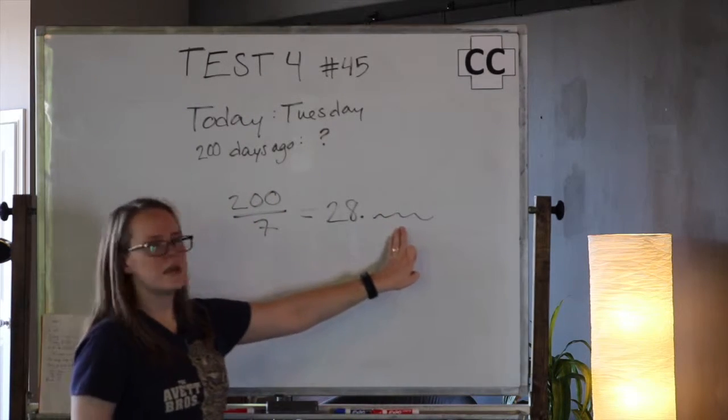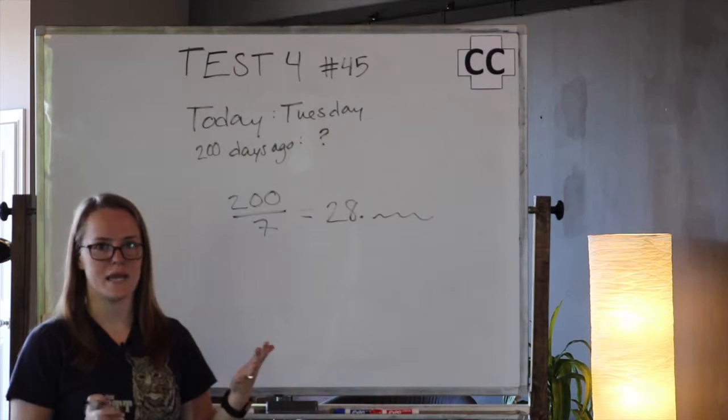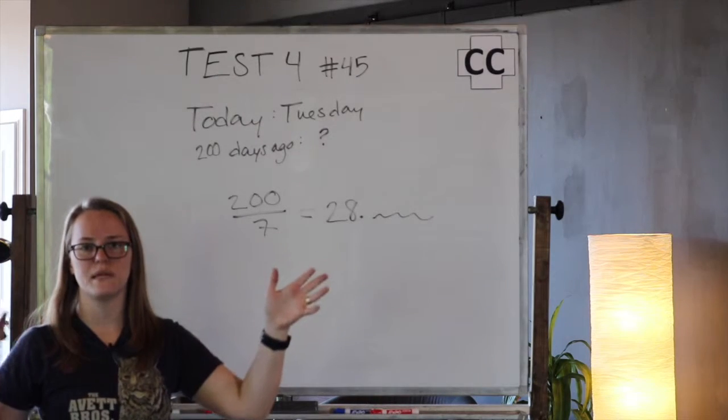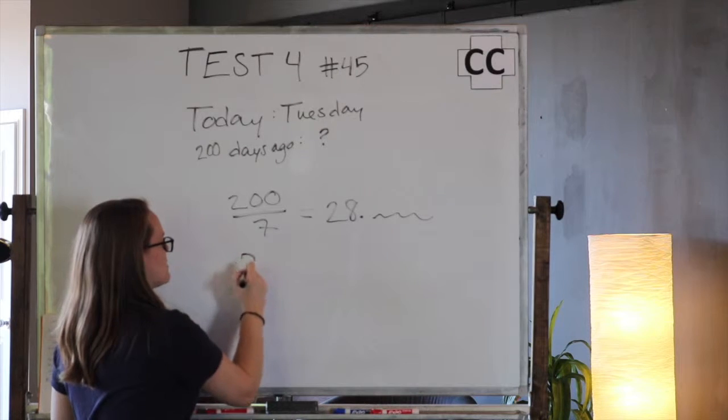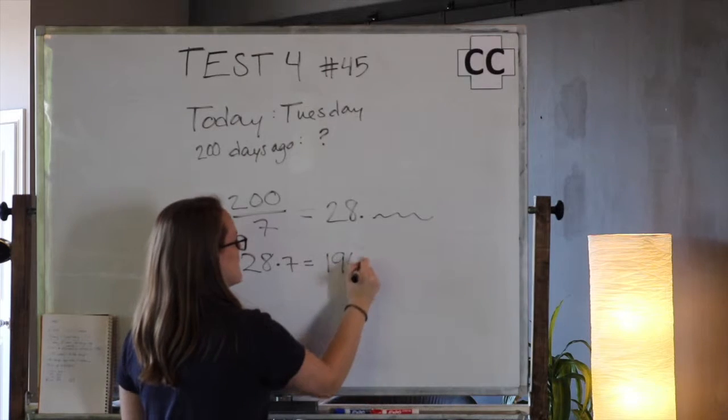So this point something or other is some portion of a week, it's a few days. So we don't know how many yet, but we're going to say 28 weeks, complete weeks have happened between now and 200 days ago. So then what I'm going to do is 28, the number of weeks times 7, and that gives us 196 days.